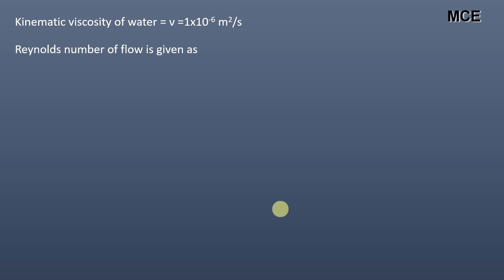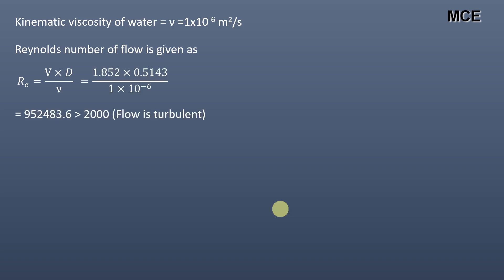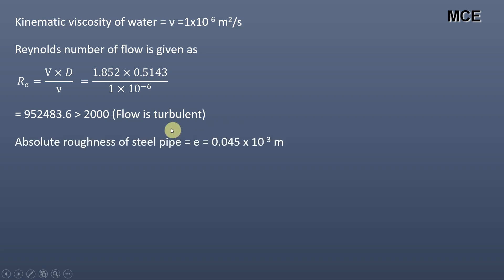Reynolds number of flow is given as RE equals velocity into duct diameter divided by kinematic viscosity. Putting values of V, D, and nu, we get the Reynolds number equal to 952,483.6, which is greater than 2000. This means the flow is turbulent.